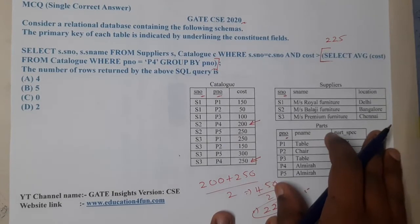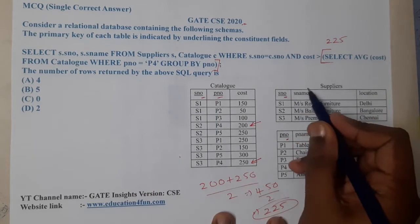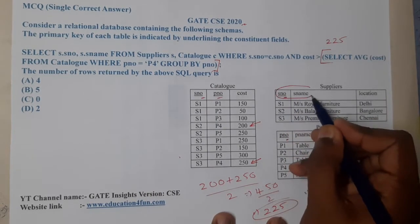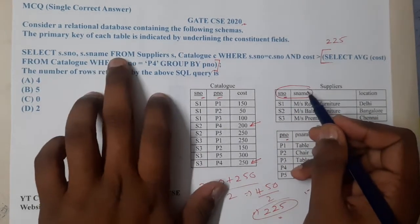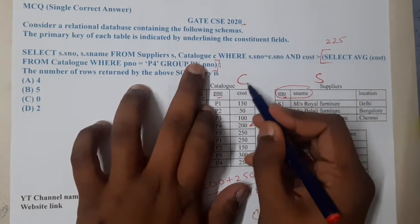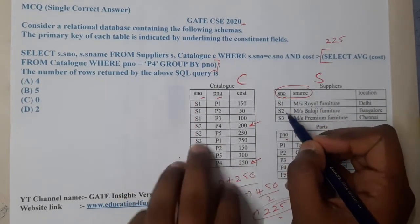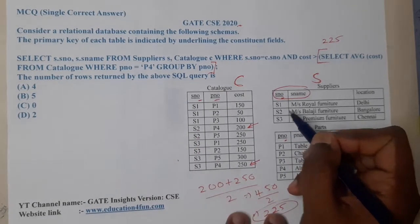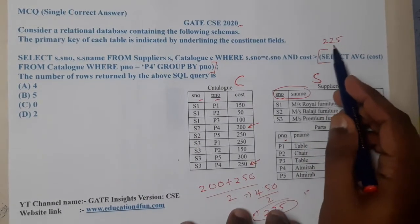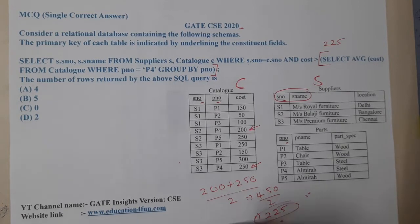Now let us read the outer statement again: SELECT s_number, s_name FROM suppliers AS s, catalog AS c WHERE s.s_number = c.s_number. We are matching the supplier number with the catalog's supplier number, and we are checking whose cost is greater than 225.